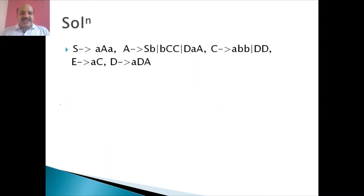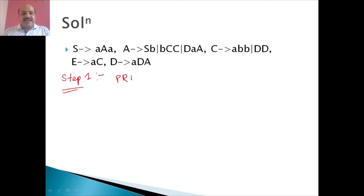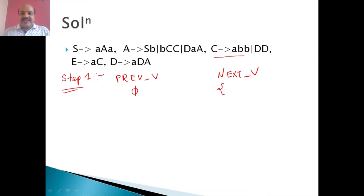So let us start. As we discussed in the earlier video, the algorithm begins with step one — every variable should derive some terminal string. We initialize previous V with phi (empty set), and for next V we identify variables that are directly deriving a terminal string. Here we can see C is deriving abb, so we are going to keep C in the first iteration. No other variable is directly deriving a terminal string, so in the next step we assign C to previous V.